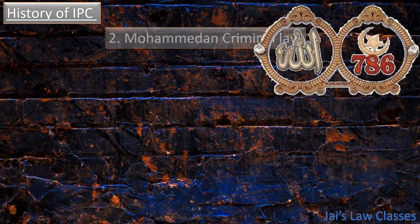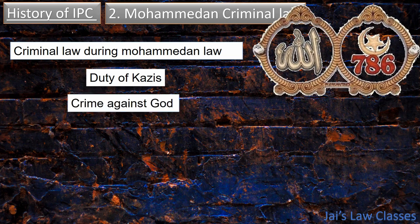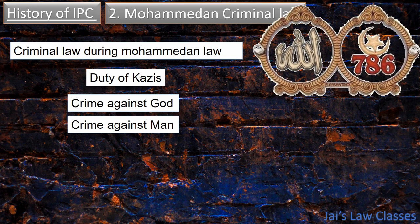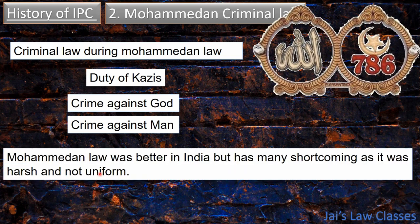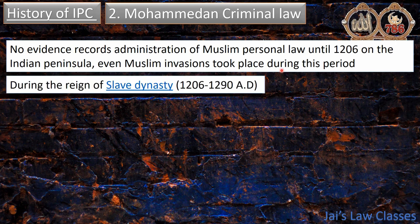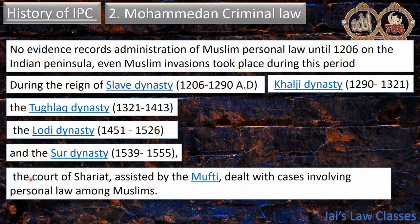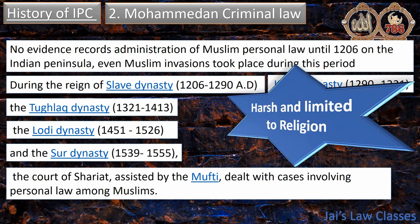During Mohammedan law, criminal law was the duty of the Qazis, and crime was of two kinds: one against God and one against man. Mohammedan law was present in India but had many shortcomings — it was very harsh and not uniform. There is no evidence of administration of Muslim personal law until 1206 on the Indian peninsula. The dynasties that ruled included the Slave, Khilji, Tughlaq, Lodi, and Suri dynasties. It was the court of Sharia assisted by Mufti that dealt with cases involving personal law among Muslims only, making Muslim law harsh and limited to religion.